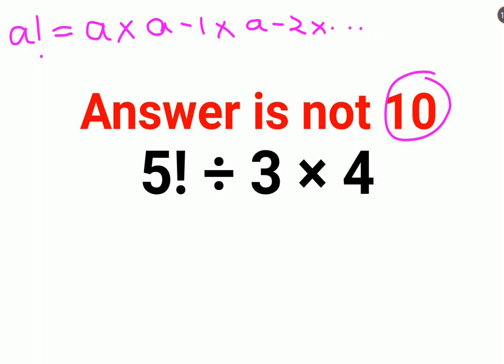And you will keep on doing until and unless you reach the value of 1. So 5 factorial will be 5 into 4 into 3 into 2 into 1.